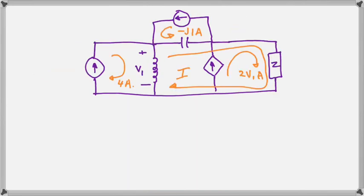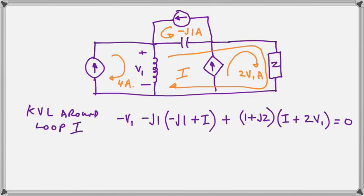Then we put in our current loops. We have a super mesh there where we're including one gigantic KVL loop, and we write the equation for that one because the others are easy because they just depend on the individual source.